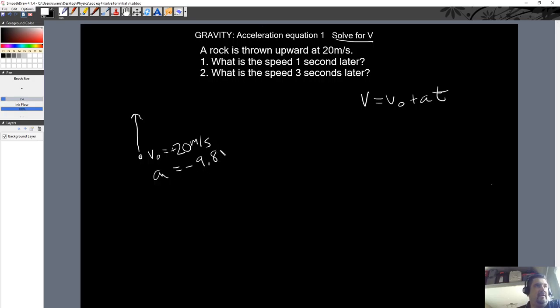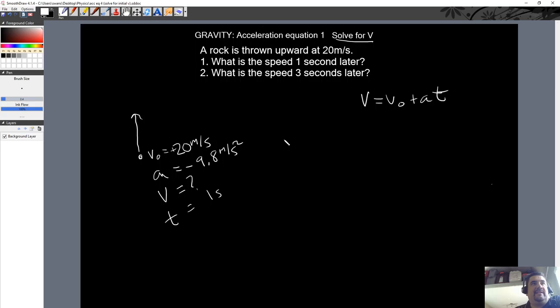Alright, what else are we looking for? We know we're looking for final velocity because what is the speed one second later? So after the fact, what is the speed? And of course, let's do t equals one second. So this is going to be two separate problems here. Let's just do one of them. One second later, what is it like?